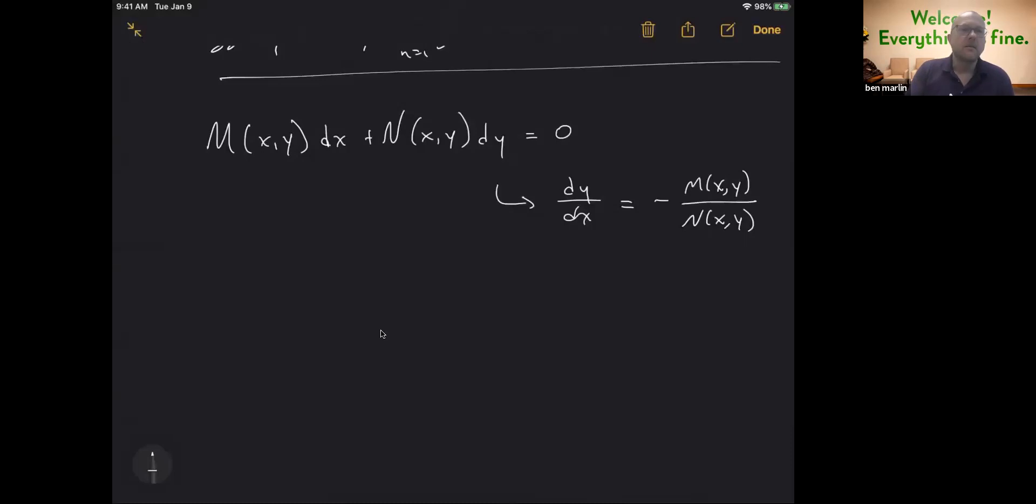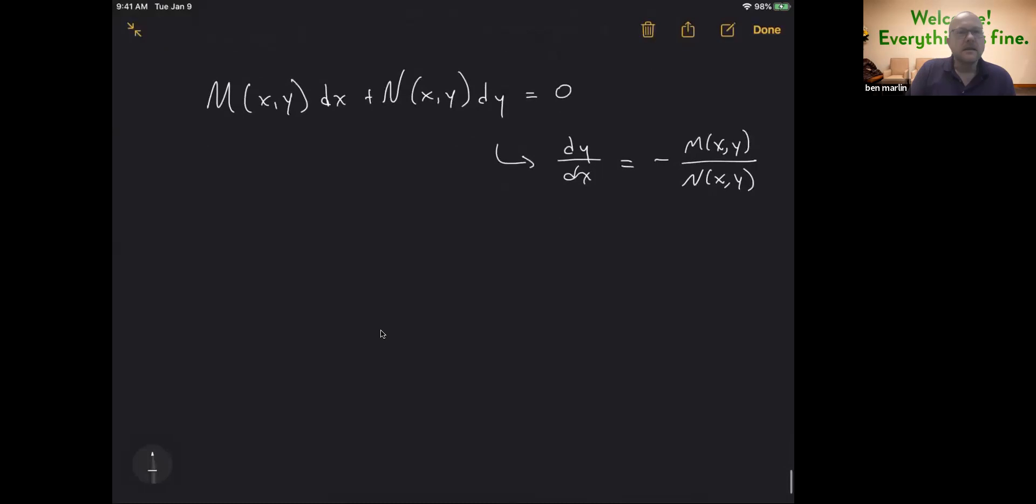Exact equations are yet another named sort of ordinary differential equation. The form of an exact equation is that it's going to be some function M(x,y) times dx and some function N(x,y) times dy. If you took that and solved for dy/dx, that would be more like what you're expecting. But the particular thing for this is that if you took M's derivative with respect to y and N's derivative with respect to x, those two things are equal in an exact equation.